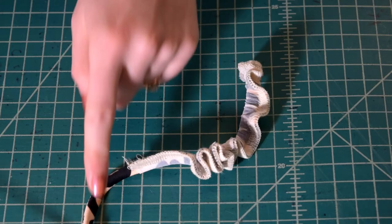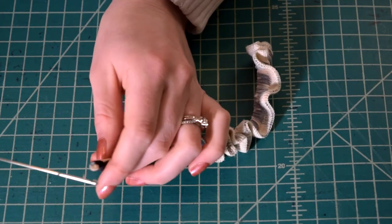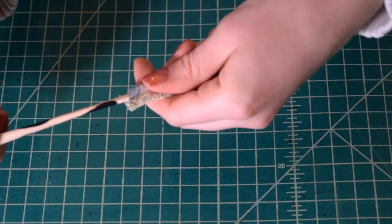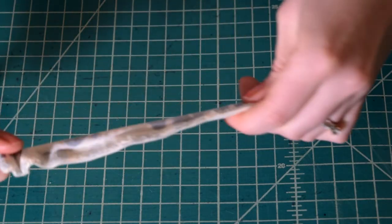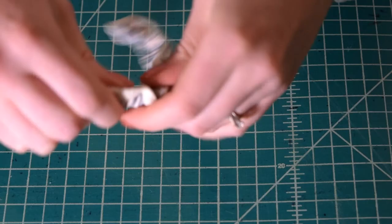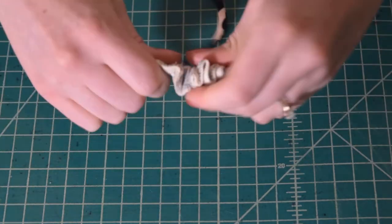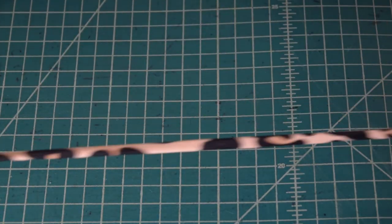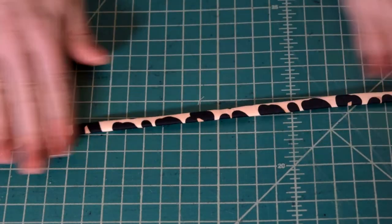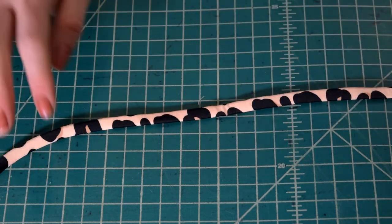So once the end is coming out, we can unhook our loop turner and then just pull on this and work it the rest of the way right sides out. And there we are, a beautiful turned strap.